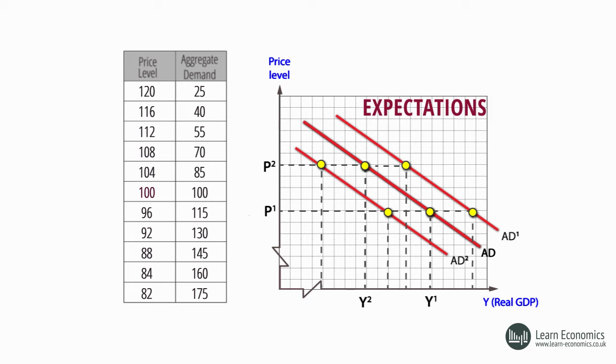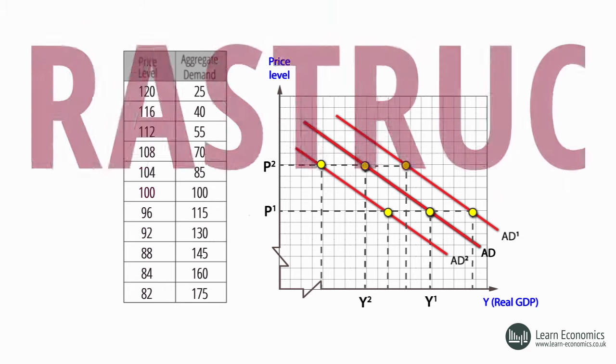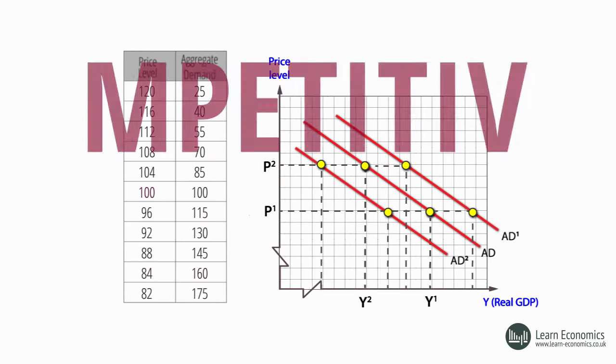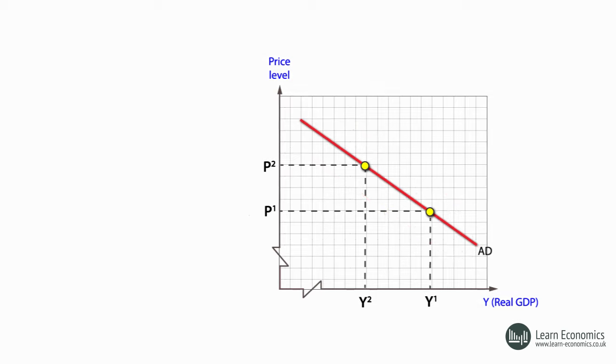Shifts in AD can also arise from decisions by governments to spend more or less, for example, on infrastructure projects or on education and healthcare. Finally, shifts can arise from changes in net exports, such as those caused by changes in exchange rates or a country's competitiveness. The fall in sterling after Brexit gave a short-term boost to UK exports and shifted AD to the right.